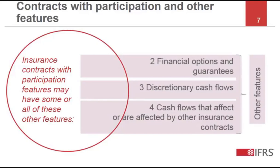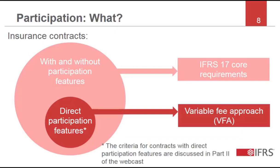Those three features are financial options and guarantees, discretionary cash flows, and cash flows that affect other contracts. IFRS 17 does not treat all insurance contracts with participation features in the same way. It uses the idea of direct participation features to determine the accounting treatment. Contracts with direct participation features have specific requirements, called the variable fee approach, while contracts without direct participation features apply the IFRS 17 core requirements.